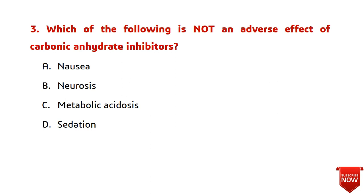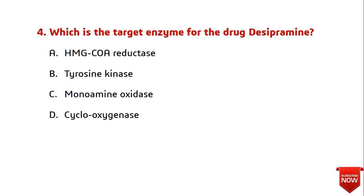Question three: which of the following is not an adverse effect of a carbonic anhydrase inhibitor? Common side effects of carbonic anhydrase inhibitors include nausea, sedation, and metabolic acidosis — but not neurosis. The answer is neurosis. Metabolic acidosis is caused by inhibition of the reabsorption of bicarbonate ions from renal tubules. Neurosis refers to mild mental illness and is not caused by carbonic anhydrase inhibitors.